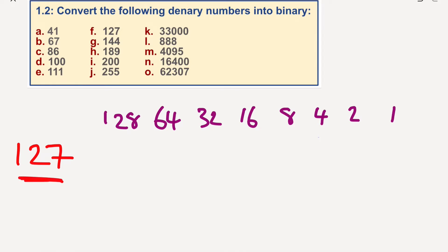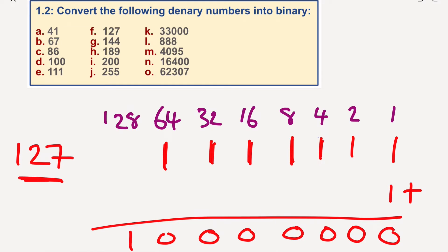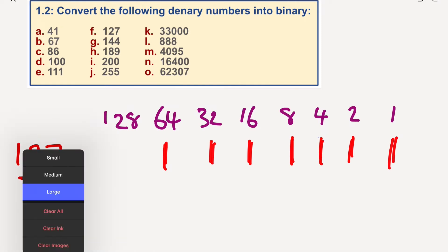The good thing about this is that 127 is 1 less than 128, so I know that if I added all these numbers together — putting 1 in every position — they all add up to 127. So the answer is simply 1111111. Nice and easy, a lot easier than maybe you first thought.